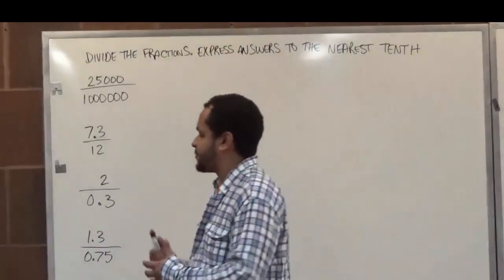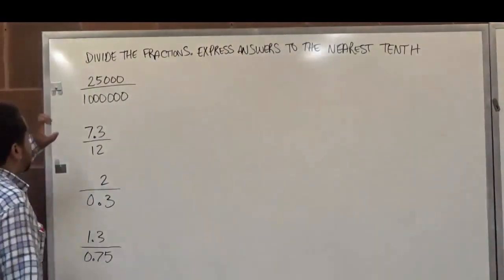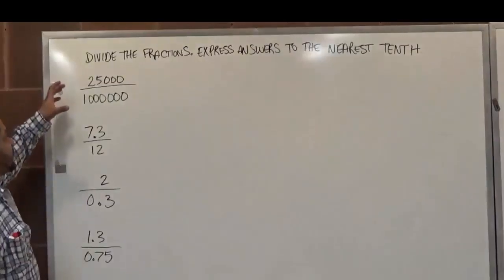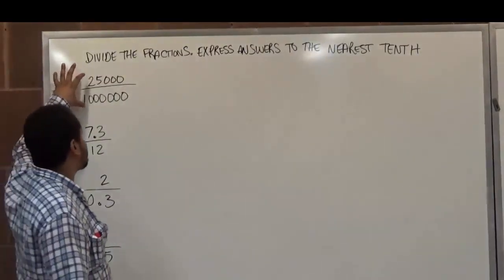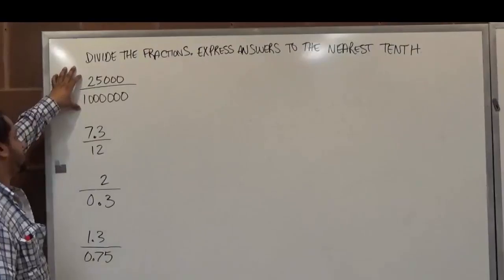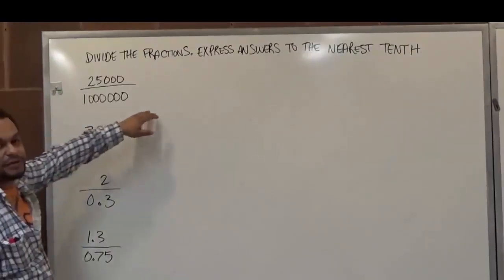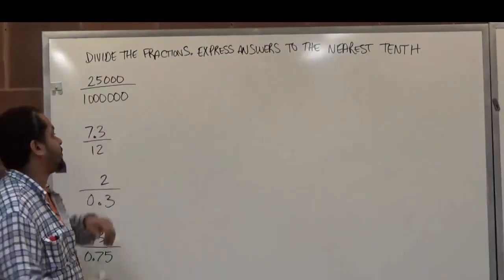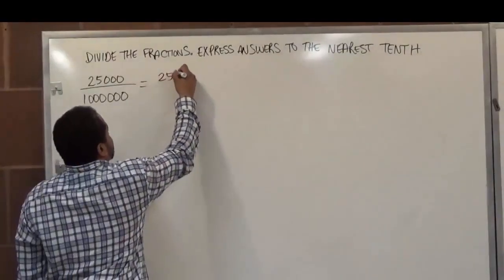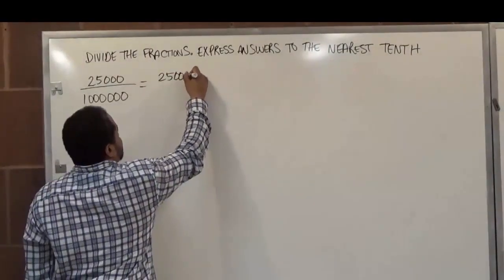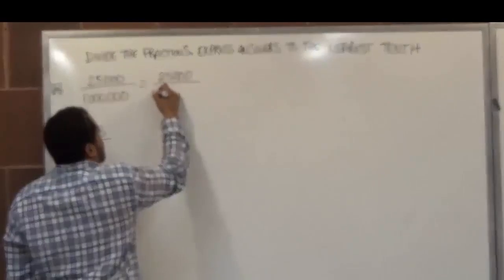There are a few key things we have to know while doing this. The first is, before we divide the fractions, we want to reduce them to the lowest terms. So here we see we have twenty-five thousand over one million. What's common about them, we're going to remove little by little. I'll just rewrite the number to show the step of what's happening: twenty-five thousand over one million.